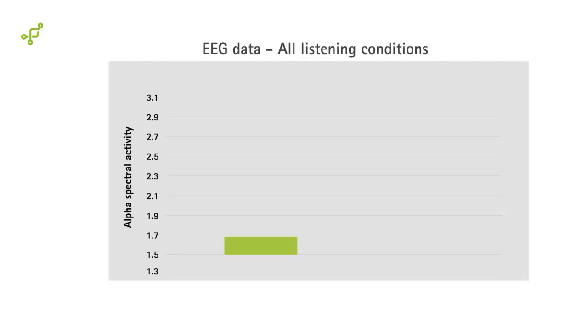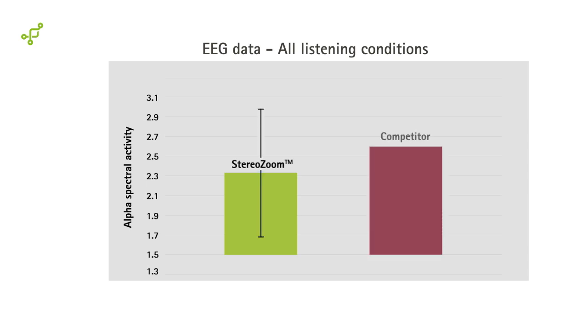Here are the results. The brain activity was significantly lower with Phonak StereoZoom than with the noise reduction technology in a competitor premium device across both listening conditions. Lower brain activity with StereoZoom indicates less listening effort with StereoZoom compared with competitor technology.